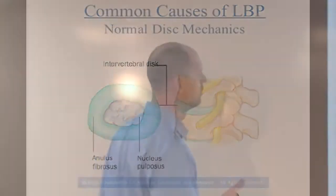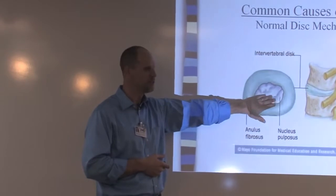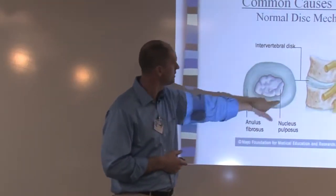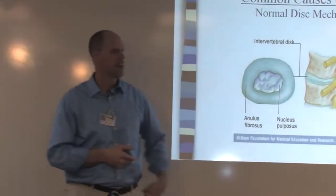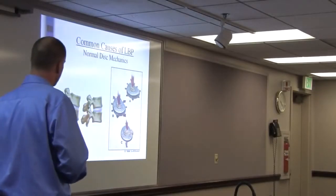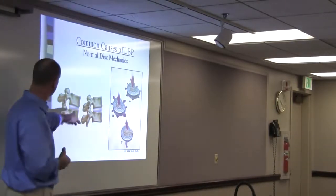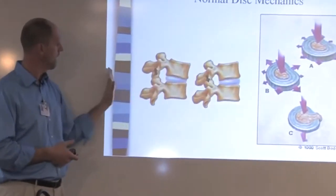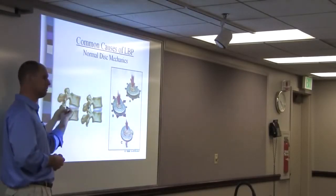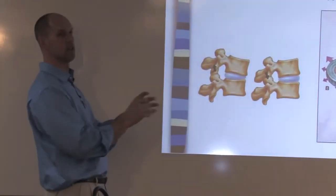Very strong rings around the outside help contain that gel center. When we move, the disc helps with movement: as you bend forward, it pushes that gel material backwards. As you bend backwards, it pushes the gel forward. Think of it like a marshmallow between two graham crackers — as gravity acts on you, it absorbs that shock, and it should decompress and go right back up.